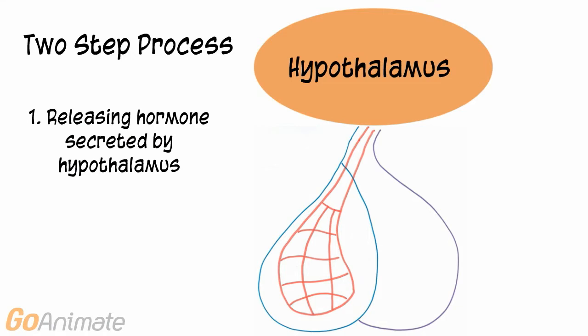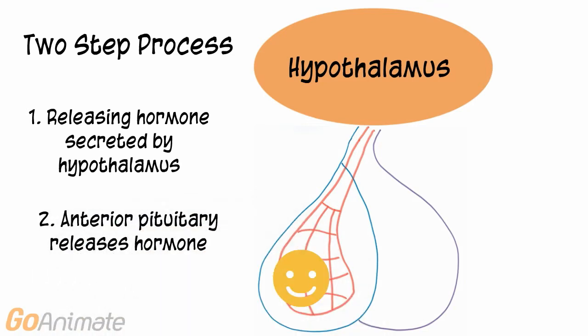There is a two-step process for secreting anterior pituitary hormones. First, the hypothalamus secretes a releasing hormone that travels to the anterior portion of the pituitary gland by way of the blood vessel network. Second, the anterior pituitary gland responds by secreting its hormone.